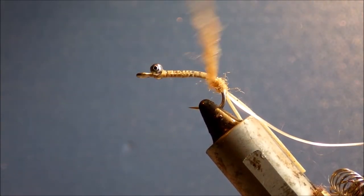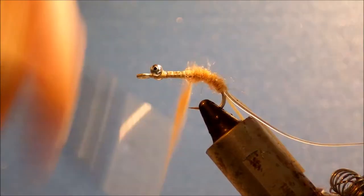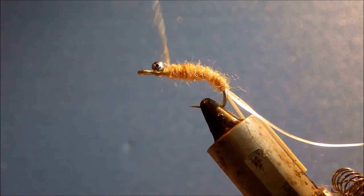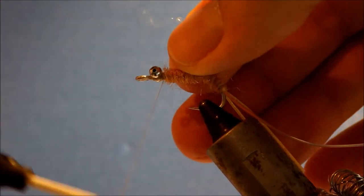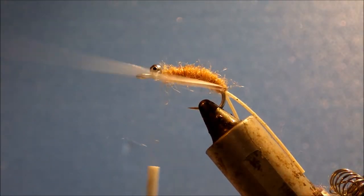And then just dub your body forward. Tighten up if you need to. And finish just shy of the bead chain eyes. Leave yourself a mil or so just to tie off the rib.